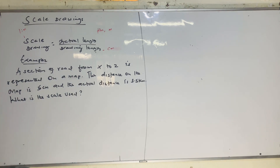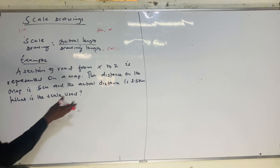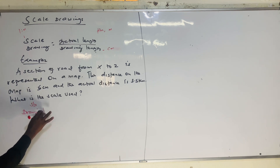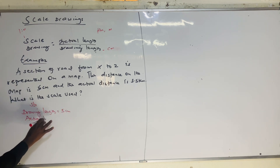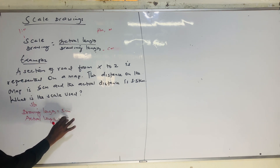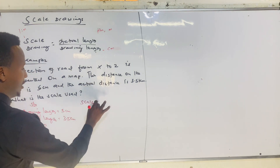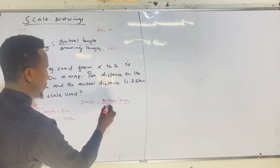This question is just like the previous one — what matters is the unit. We have 5 centimeters as the drawing length and 3.5 km as the actual length. The scale is under question mark. Scale equals actual length divided by drawing length.